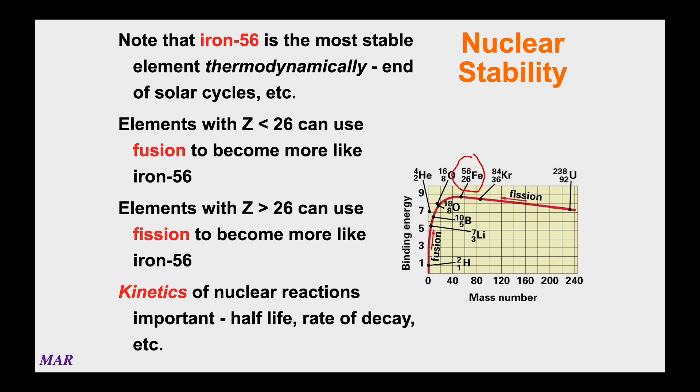If you look at that binding energy curve, there's a bunch of atoms less than iron which are getting more like iron, but there's also a lot of elements and atoms that have heavier masses that also want to be like iron. So iron literally is the end of the cycle. Once things create iron, the atoms kind of stop. There's no more processes that are going to happen. Atoms that have less than 26 protons will use a process called fusion to become more like iron-56. On the other hand, atoms with more than 26 protons will undergo fission to become more like iron-56.